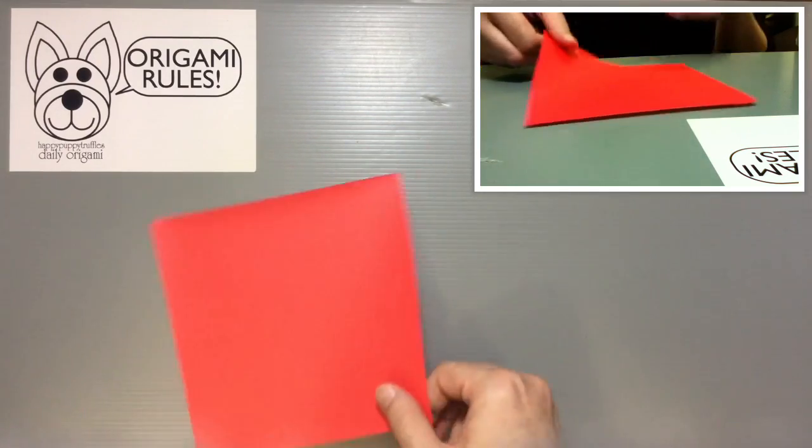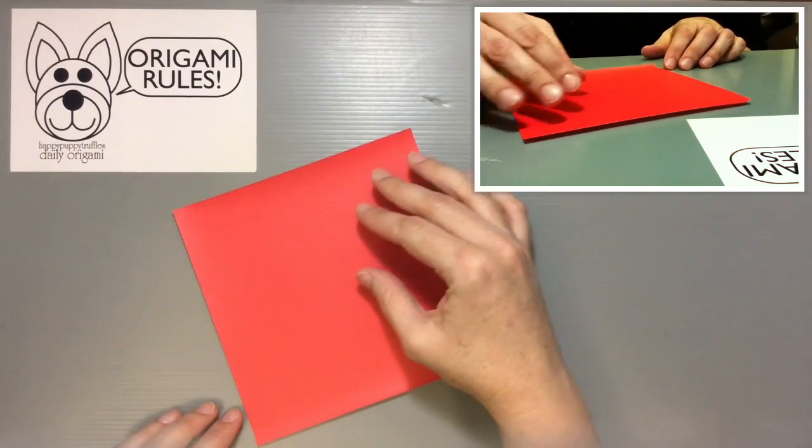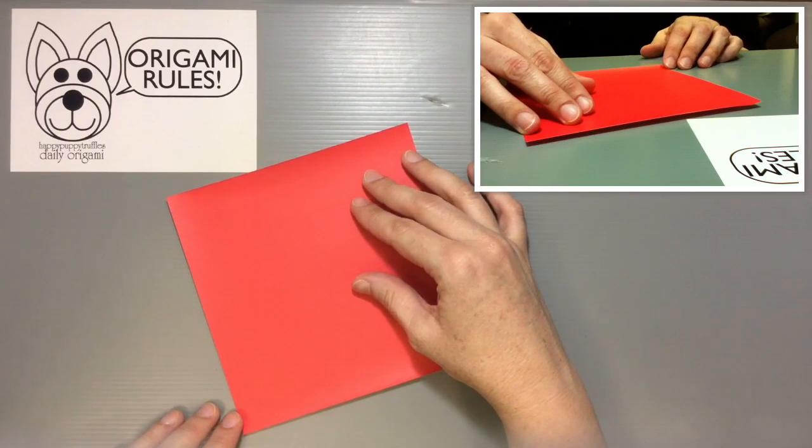For this origami, you just need one piece of origami paper. I'm using a traditional piece of 15 by 15 centimeters.